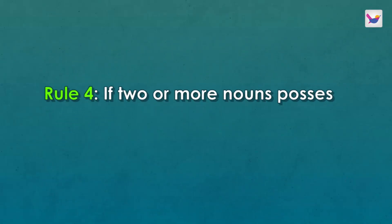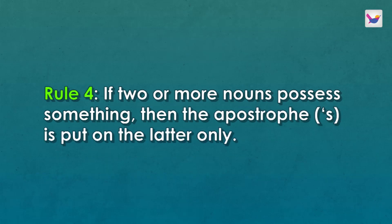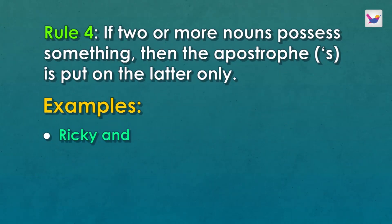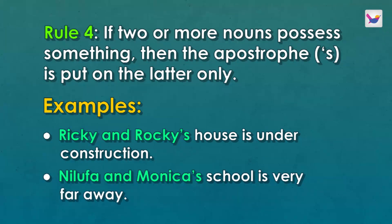Rule number four: if two or more nouns possess something together, then the apostrophe S is put on the last noun only. For example: Ricky and Rocky's house is under construction. Nilufa and Monica's school is very far away. As a result, when the owners jointly possess something, we use apostrophe S only on the last noun.